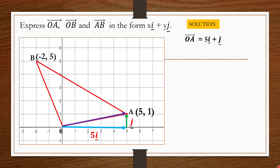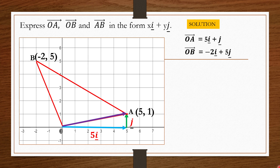For vector OB, coordinate B is (−2, 5), so OB equals negative 2i plus 5j. If a vector is a position vector originating from the origin, you can use the coordinate directly. Vector AB is not a position vector since it doesn't start from the origin, so we form the equation: AB equals AO plus OB.